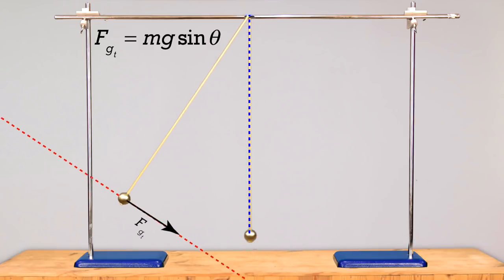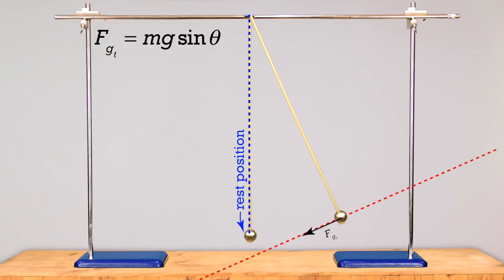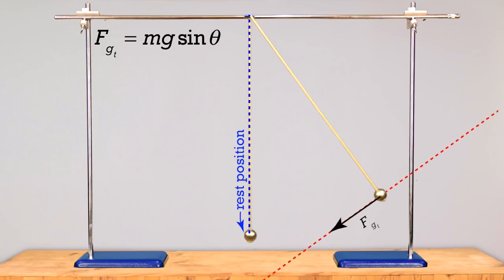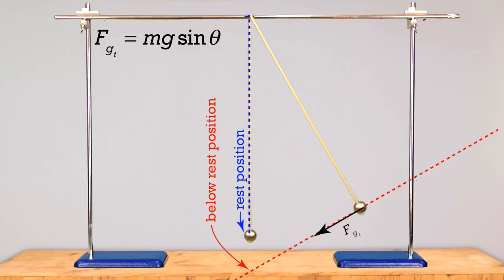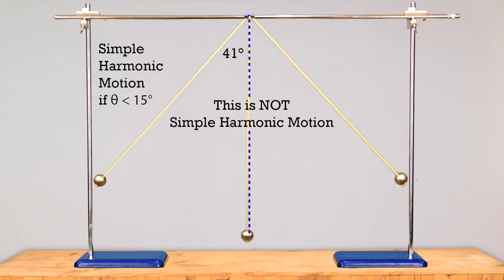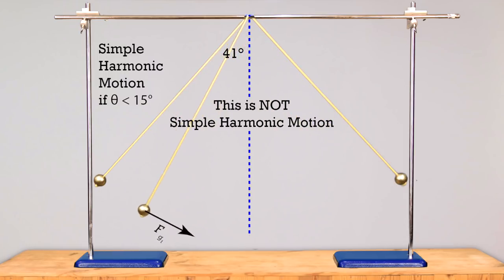Notice how the force of gravity tangential starts out pointed toward rest position, but as the angular displacement from rest position increases, the force of gravity tangential points increasingly to a location which is below the equilibrium position. This means the force of gravity tangential is only a restoring force for small angles. Typically, a pendulum is considered to be in simple harmonic motion as long as the amplitude of the motion is less than 15 degrees. Where did 15 degrees come from? We won't get into the calculus behind why the maximum amplitude is 15 degrees.